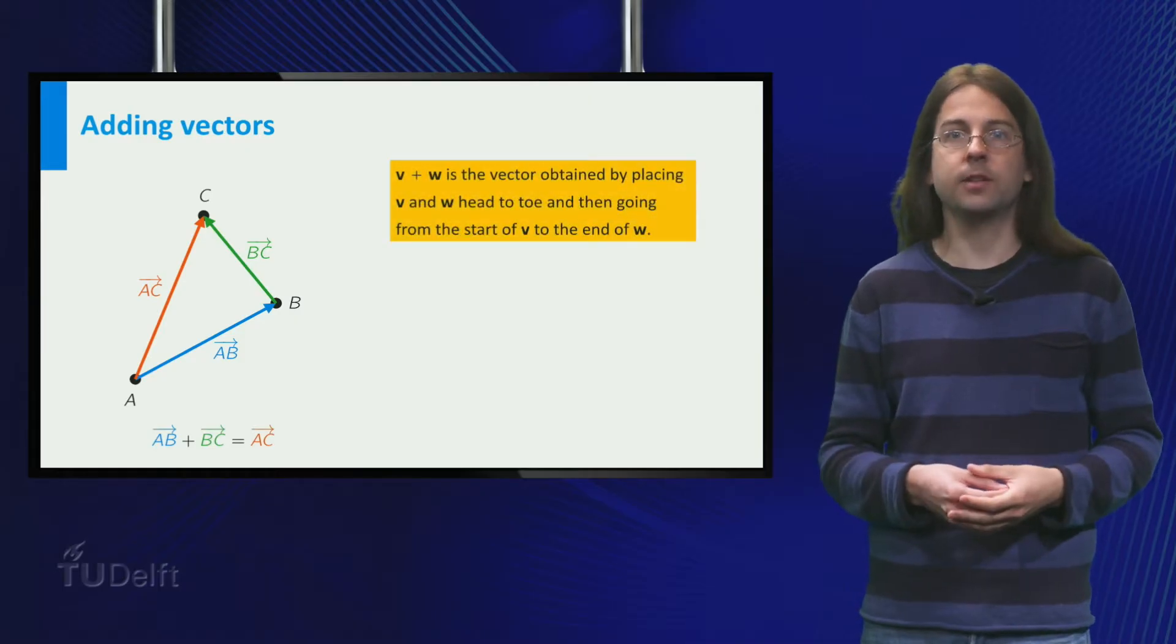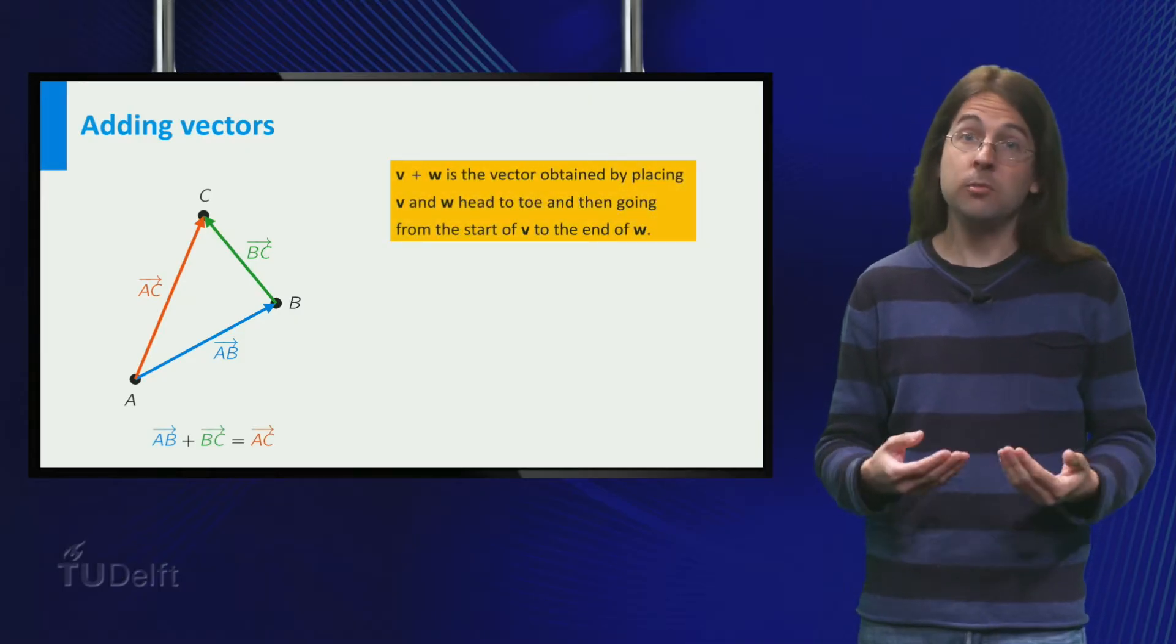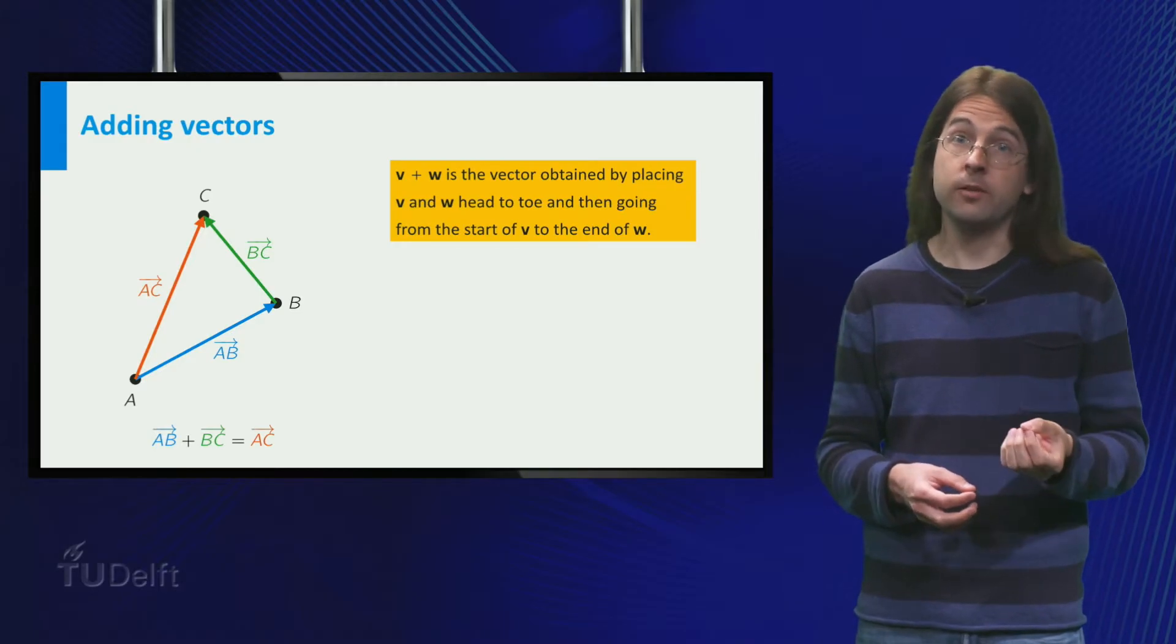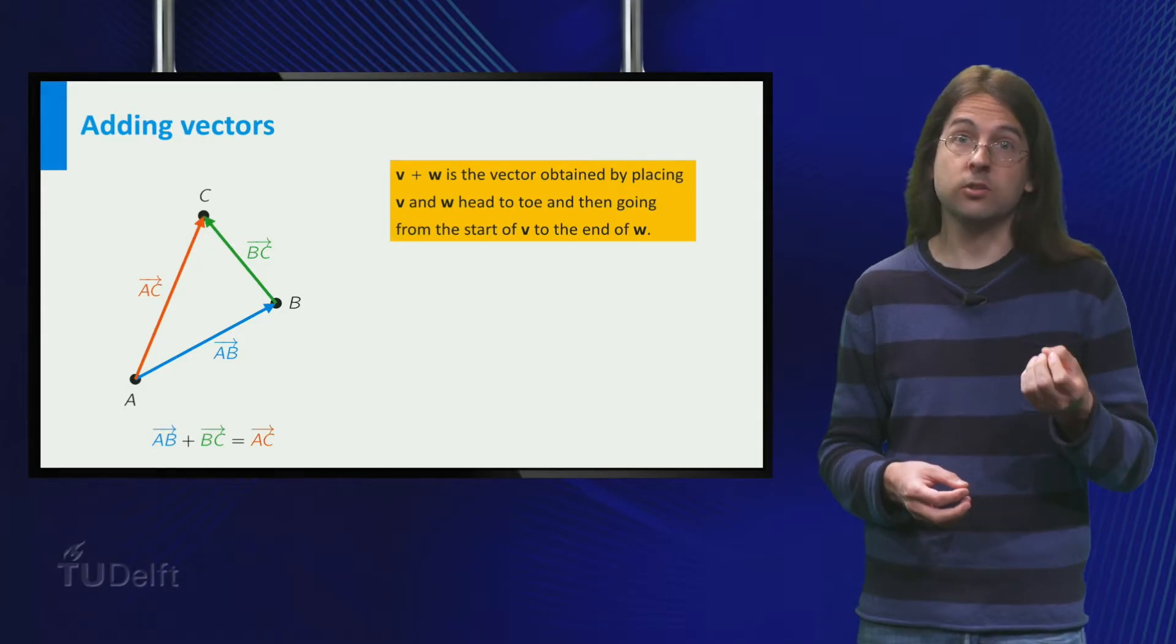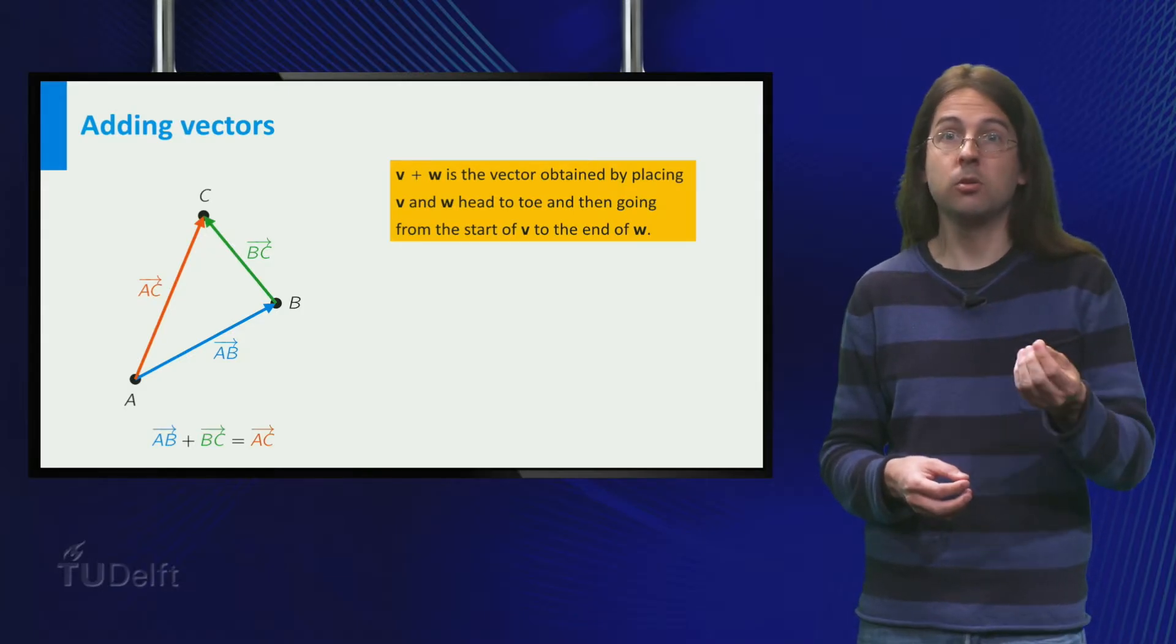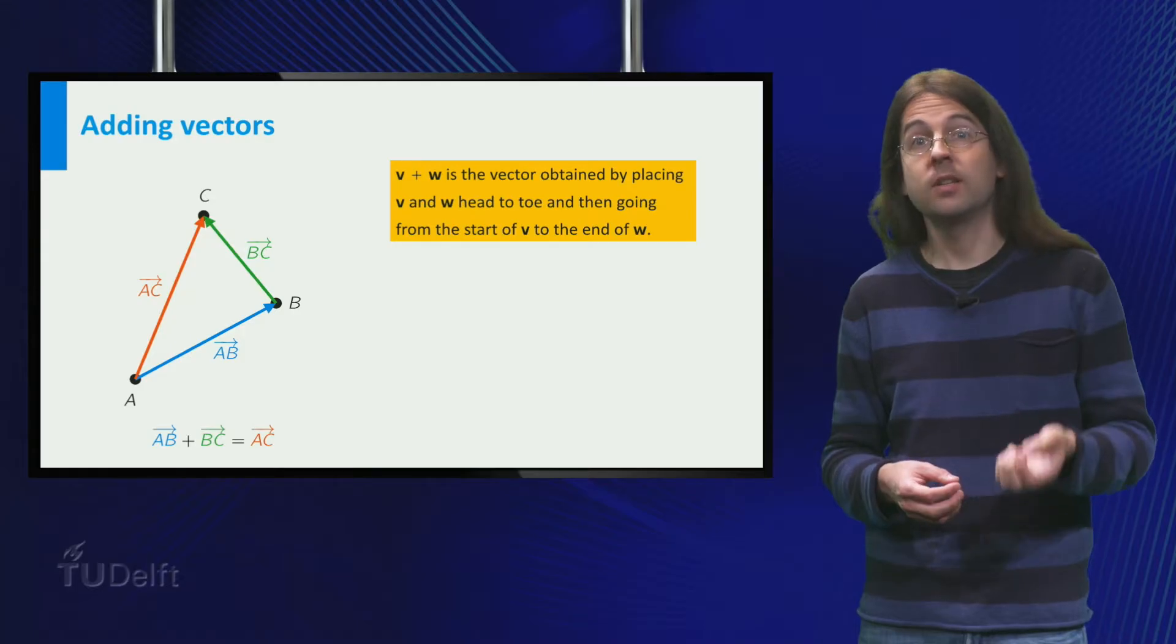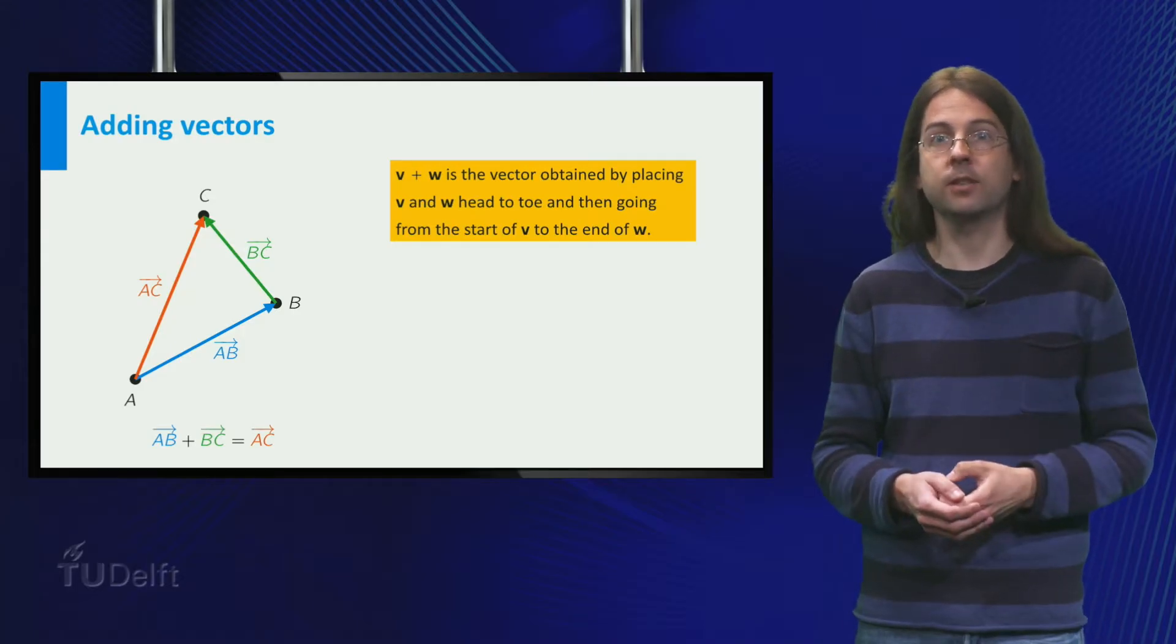This explains the definition for vector addition. The sum of vectors ab and bc equals the vector ac. In general, if we have two vectors which are placed head to toe, their sum has as starting point the starting point of the first vector, and the end point is the end point of the second vector.